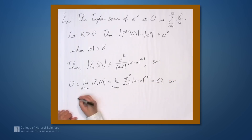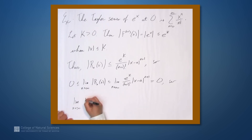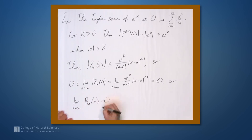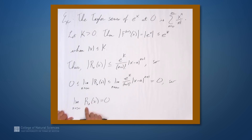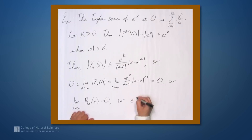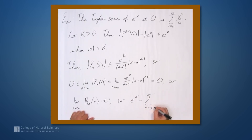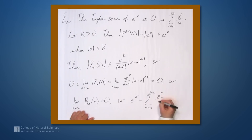So the limit as n approaches infinity of r sub n of x equals 0, which means that the nth Taylor polynomials are approaching the value e to the x. So e to the x in fact equals its Taylor series: the sum from n equals 0 to infinity of x to the n over n factorial.